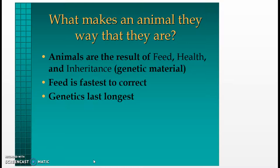What makes an animal the way they are? Animals are the result of feed, health, and inheritance or genetic material. Feed is the fastest to correct; genetics takes the longest.